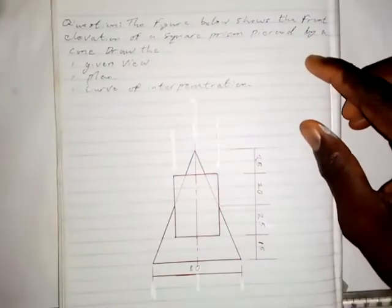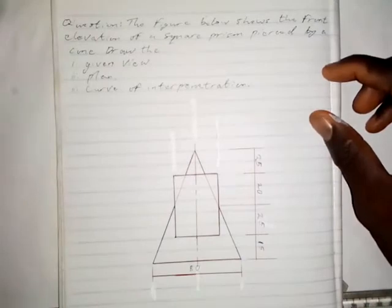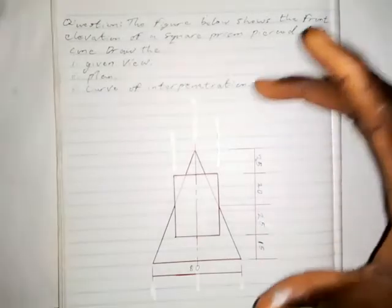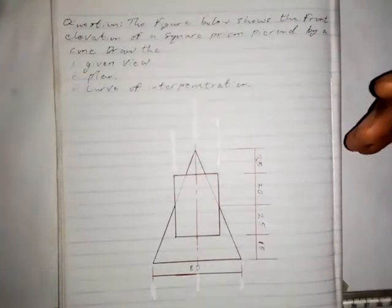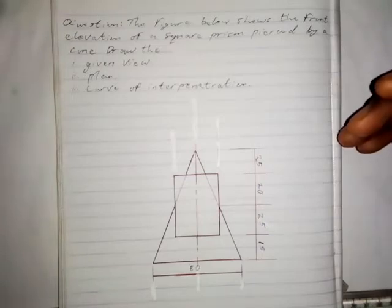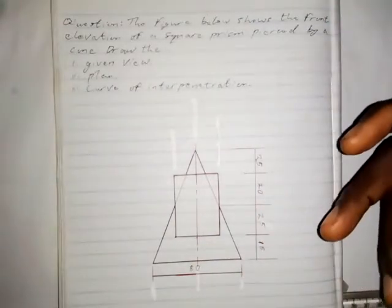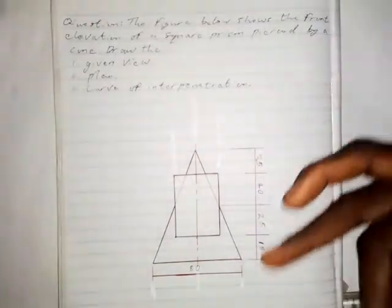The question states that the figure below shows the front elevation of a square prism pierced by a cone. We are asked to draw: Roman figure one - the given view; Roman figure two - the plan; and Roman figure three - the curve of interpenetration. So those are the three tasks we need to answer, involving a cone that pierces a square prism.